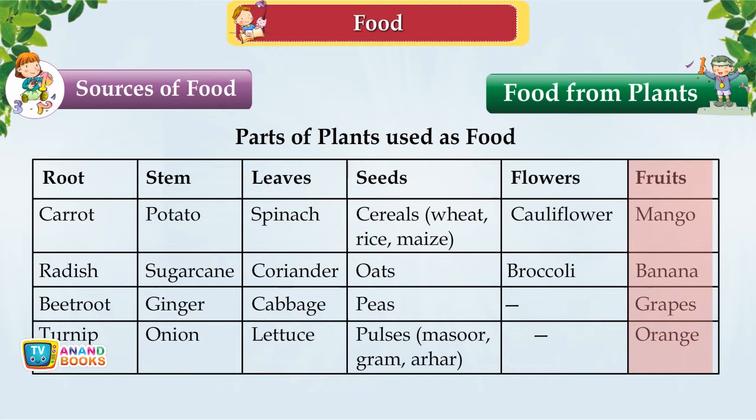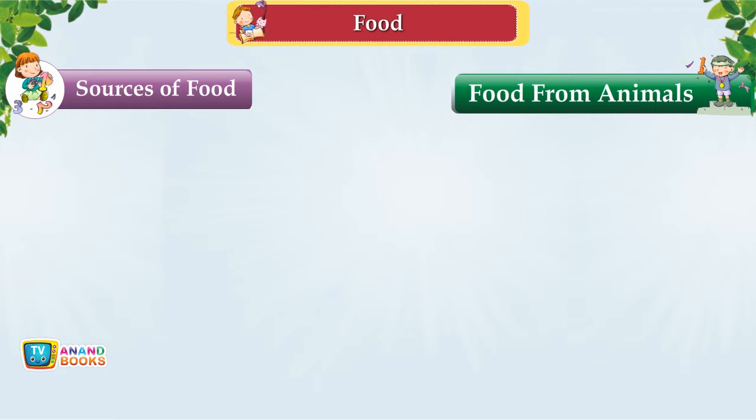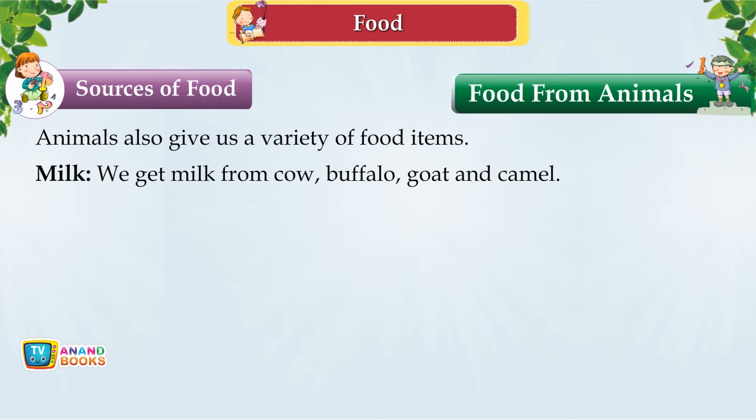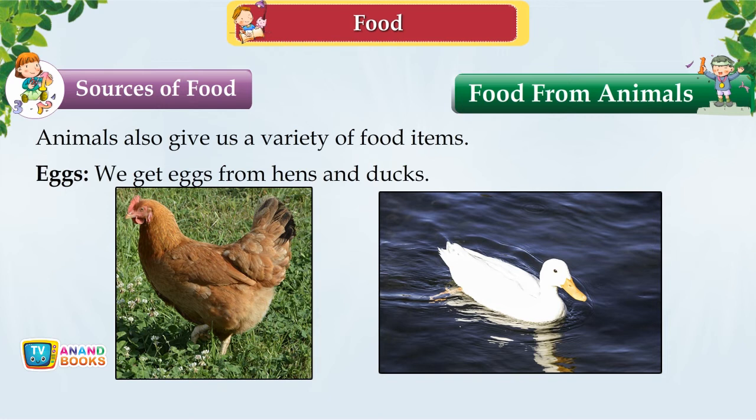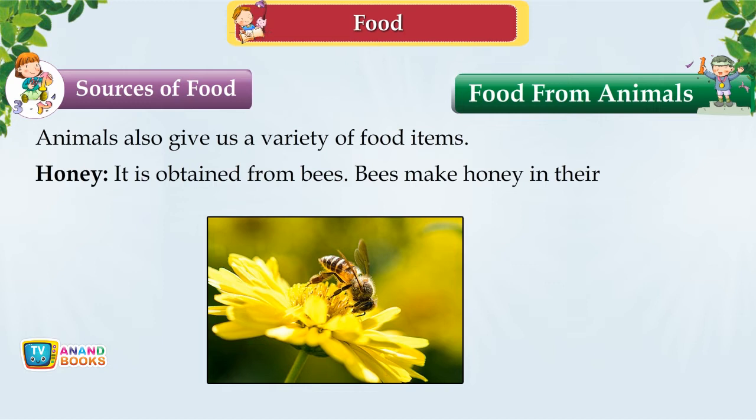Food from Animals. Animals also give us a variety of food items. Milk — we get milk from cow, buffalo, goat and camel. Meat — animals like goat, hen, fish and sheep give us meat. We get eggs from hens and ducks. Honey is obtained from bees, which make honey in their honeycombs by sucking nectar from a variety of flowers.